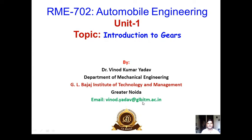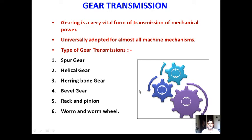Hello and welcome to the lecture series on automobile engineering. Today we'll discuss gears, which are important elements for an automobile. Gearing is a very vital form of transmission of mechanical power, important for automobiles and fitted in all cars, buses, trucks, and every transport medium. These gears basically transmit torque from one location to another and are universally adopted for many other applications like machine elements and mechanisms.